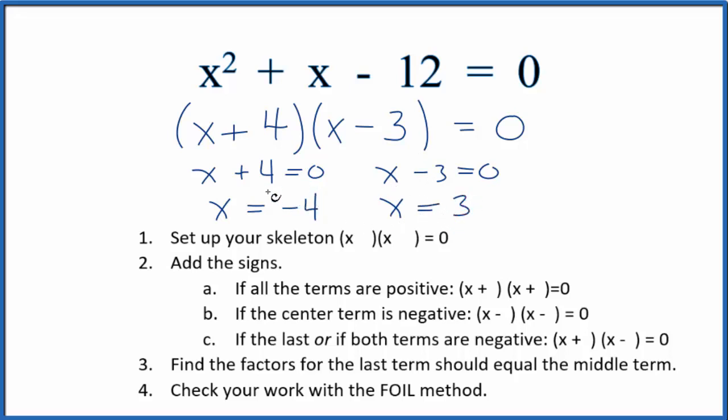So if we put minus 4 in for each x here and we do the math, all of this will equal 0. We could also put the 3 in here, that's another solution, and that would make this equal 0 as well.